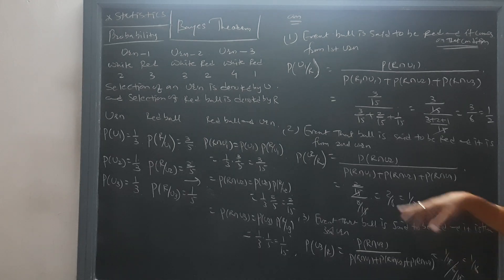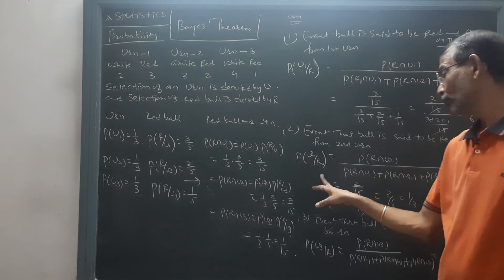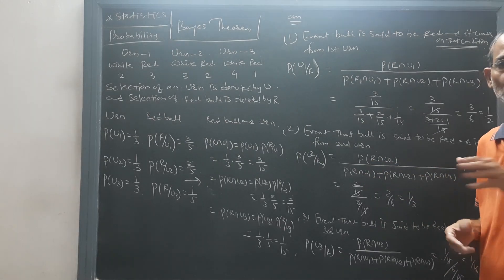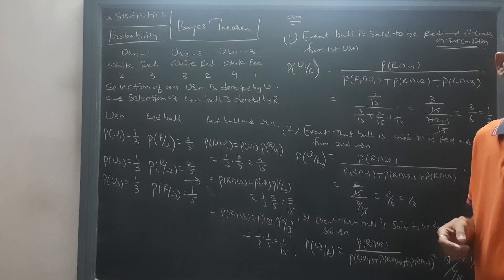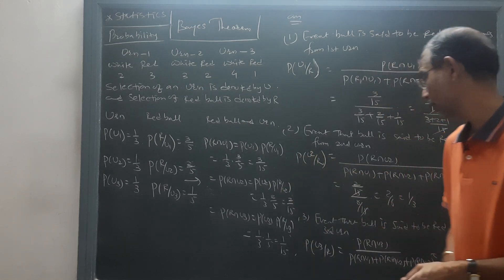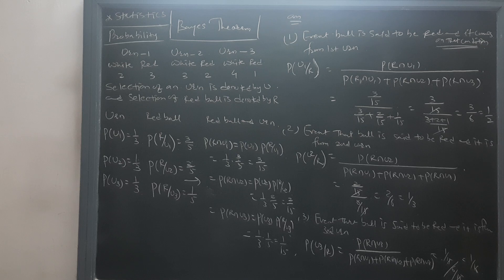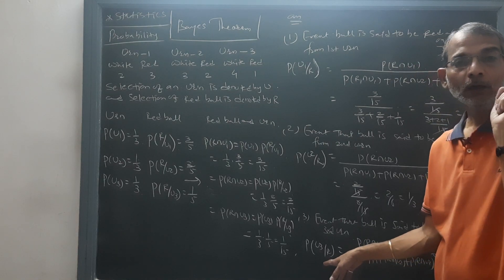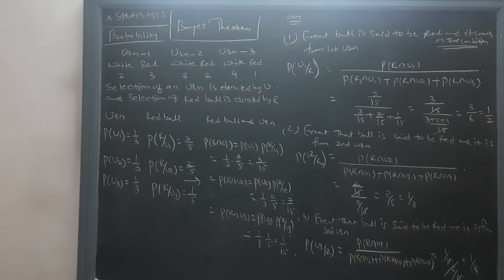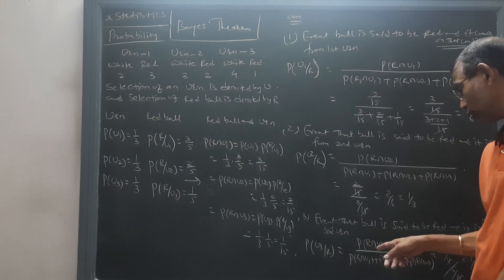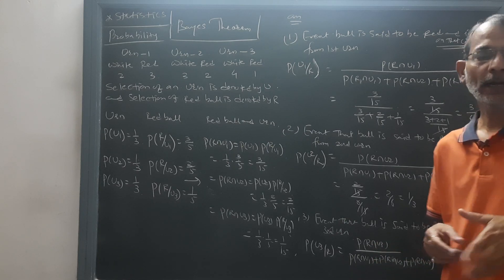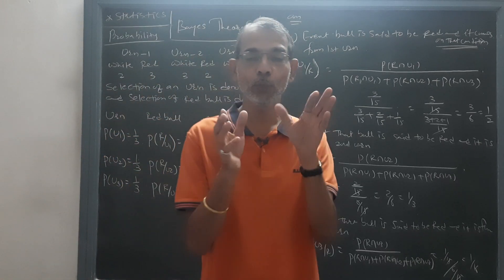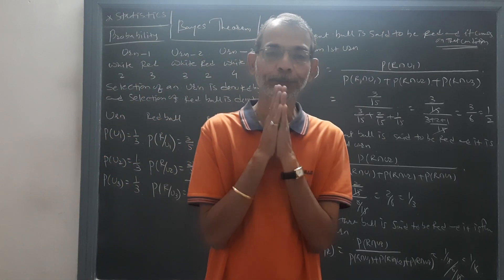For the second point, ball is red on the condition it comes from the second urn: at the numerator take P(R ∩ U2), at the denominator the sum of all three intersection events. For the third event, ball is red on the condition it comes from the third urn: at the numerator take P(R ∩ U3), at the denominator the sum of all three intersection events. This gives you all three answers.